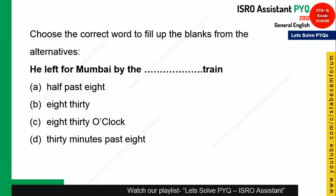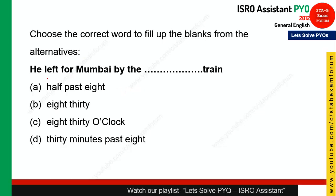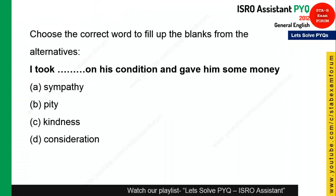This question is confusing because all options represent time. The statement is: 'He left for Mumbai by the ___ train.' Whenever you refer to a train at a fixed time, you use the direct time format such as '8:30' rather than 'half past 8' or '30 minutes past 8'. So option B is the right answer.